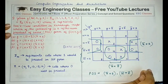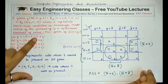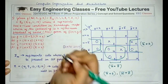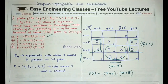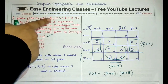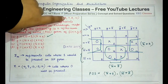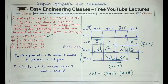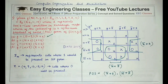The minimum POS form (X-complement + Z)(W-complement + Z-complement) corresponds to the first option. The key trick was recognizing that sigma notation gives SOP minterms, so you must take the complement cells for POS. Please like, share, and comment below. Subscribe to Easy Engineering Classes for more lectures in this preparation series. Thank you for watching — press the bell icon to get notifications of upcoming videos.